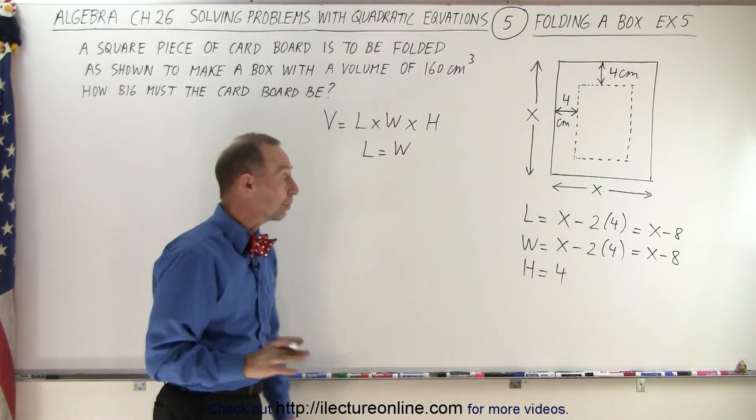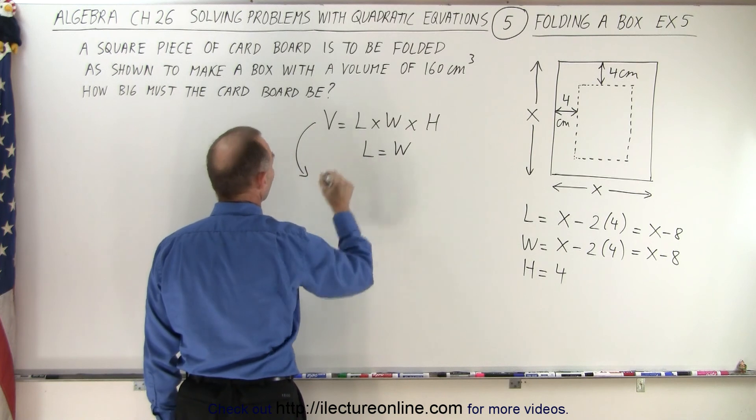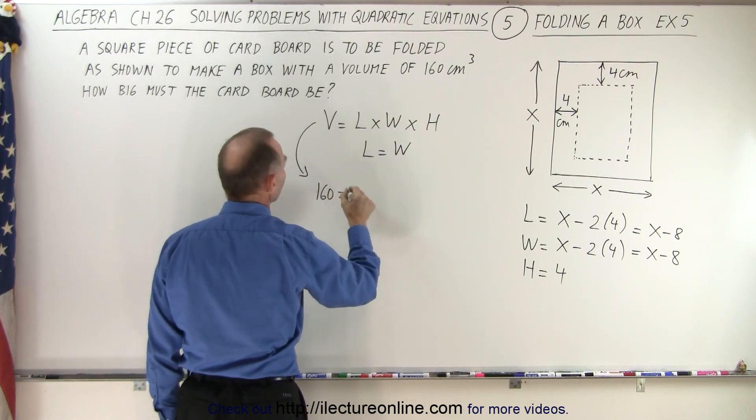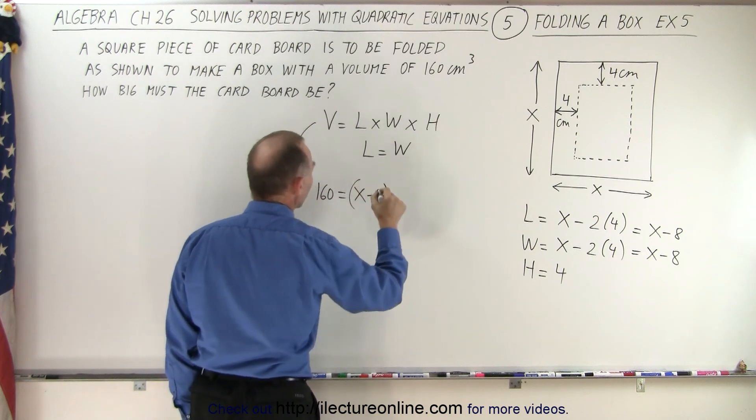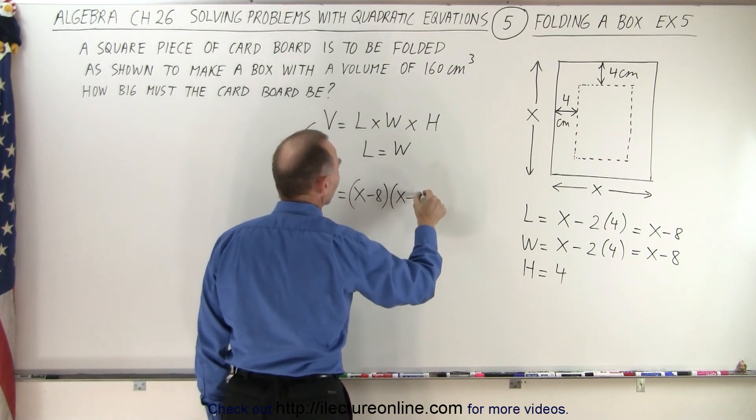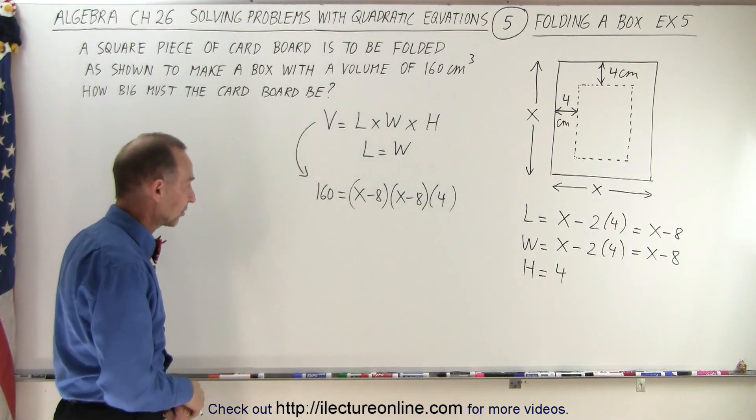And now we're ready to set up the equation for the volume. We can now see that the volume being 160 is equal to the length which is x minus 8 times the width which is x minus 8 times the height which is 4. And that equation needs to be solved for x.